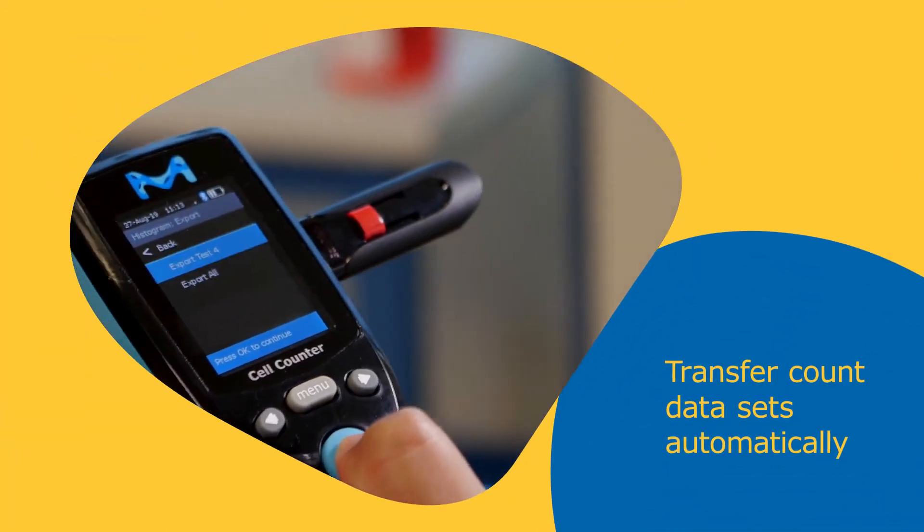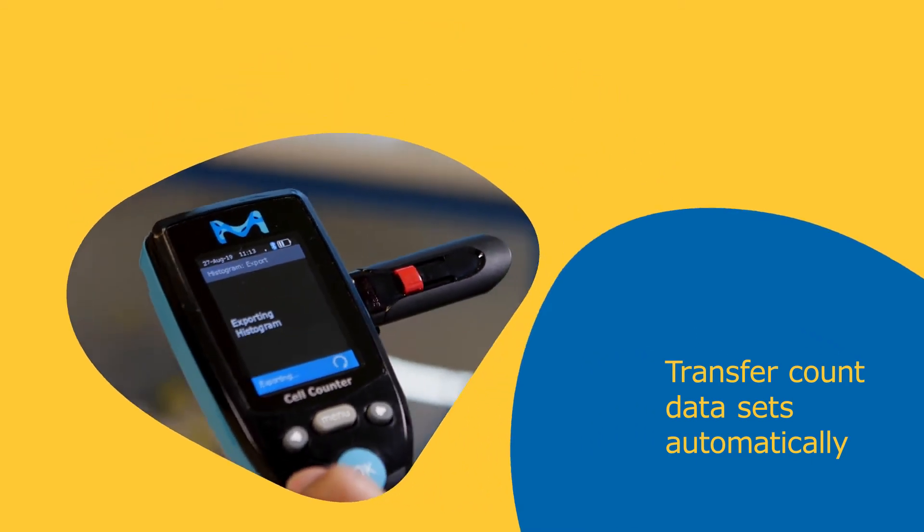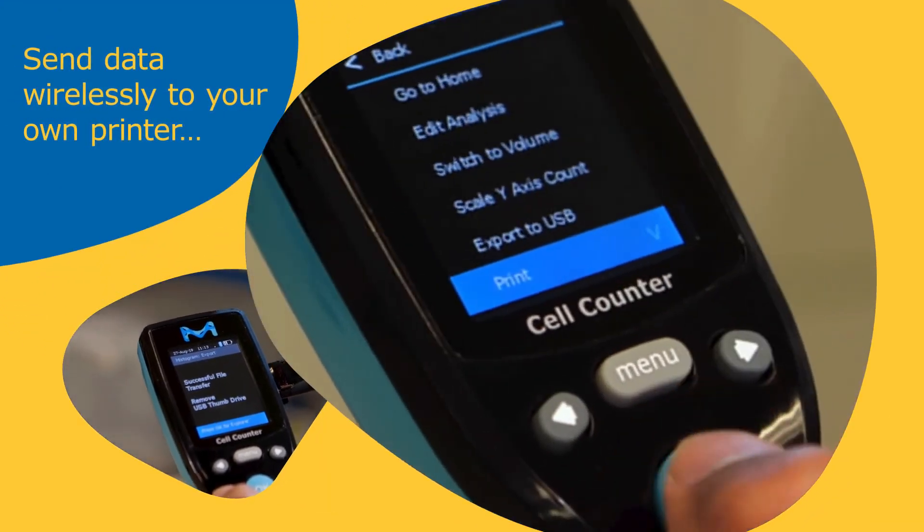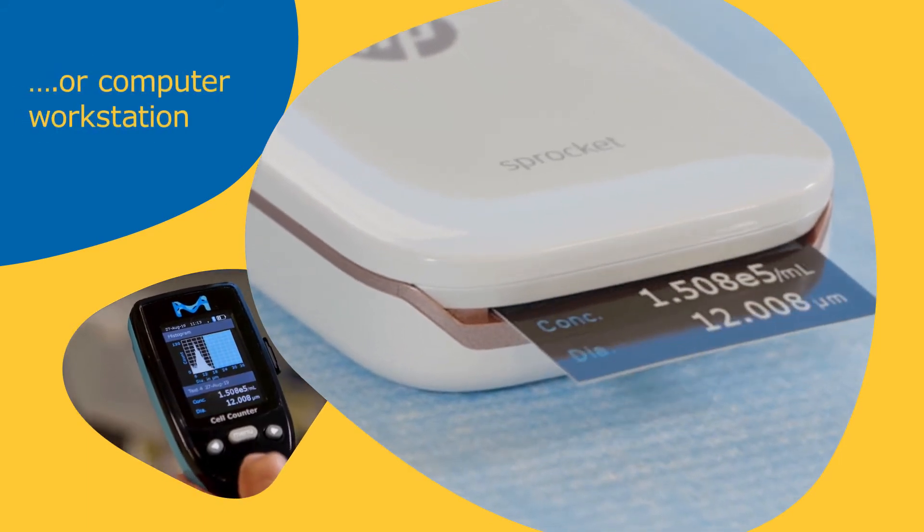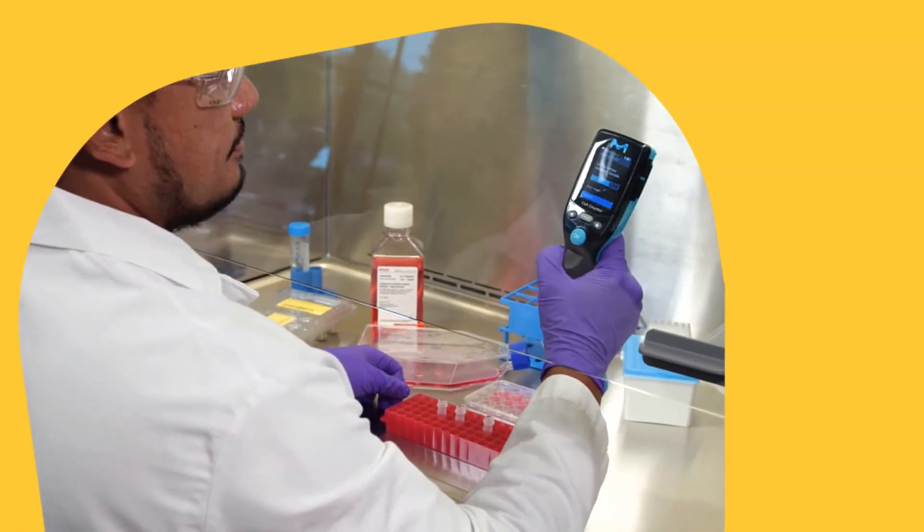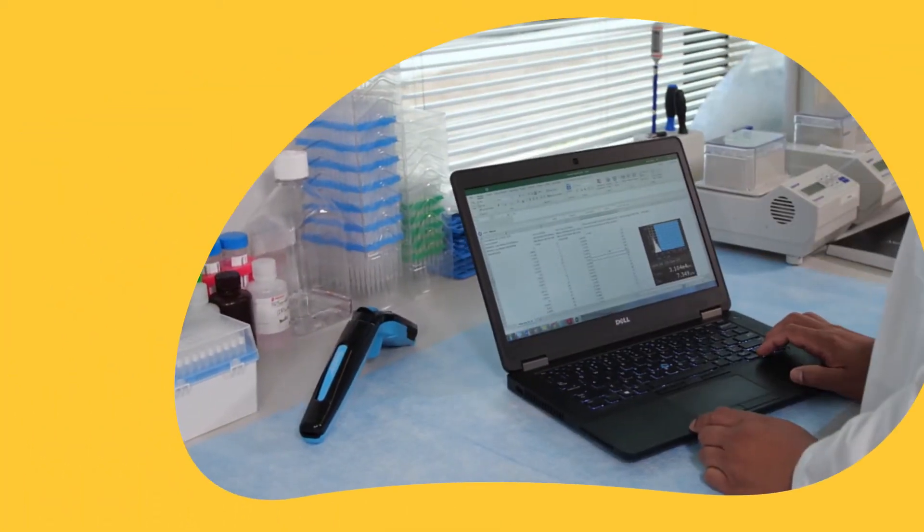The Scepter 3.0 counter provides the option of automated data transfer by USB drive or via wireless transmission to the user's printer or computer workstation. The instrument stores hundreds of results for easy retrieval of archival data, and the charging station can be mounted anywhere so the Scepter 3.0 counter is always ready.